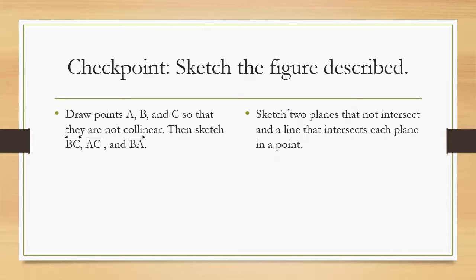Alright, checkpoint problems number three and four are yours. For both of these, you have to sketch the figure described. For number three, draw points A, B, and C so that they are not collinear. Then sketch line BC, line segment AC, and ray BA. For number four, sketch two planes that do not intersect and a line that intersects each plane in a point. Alright, that's it from me. I'll see you all soon.